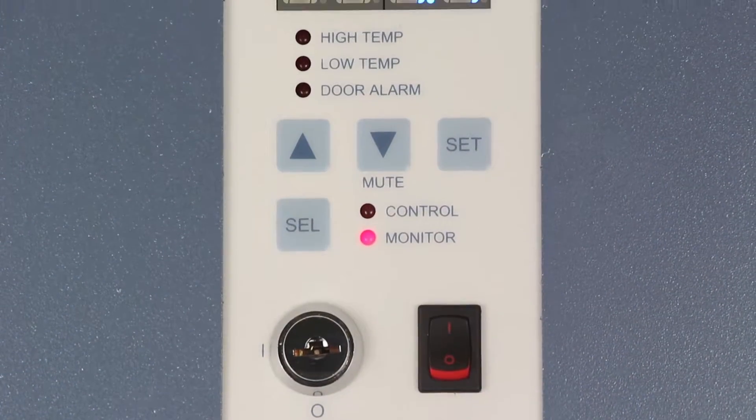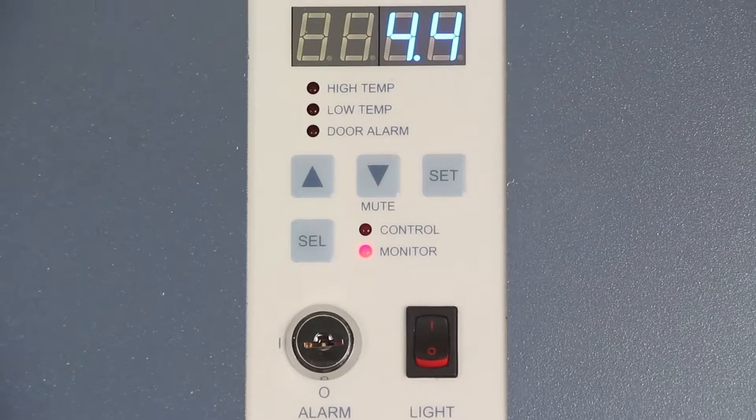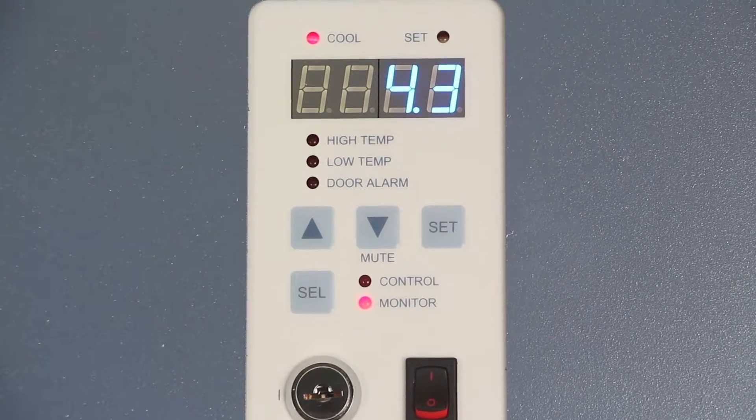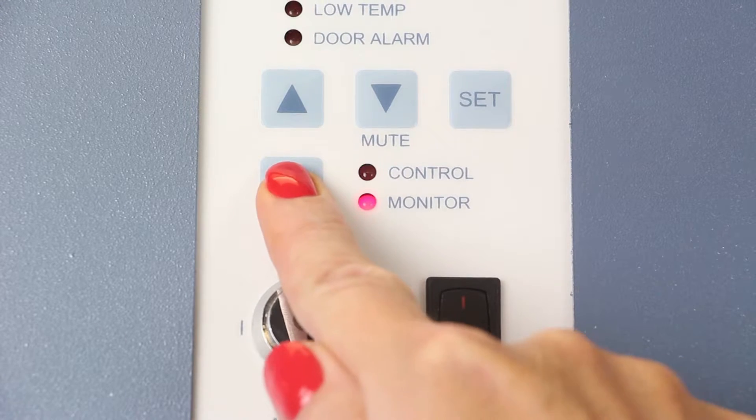Horizon Series refrigerators feature a temperature controller with an LED temperature display. On upright models, the controller is mounted in the top bezel. It provides you with a display of the current temperature and all essential alarm features.